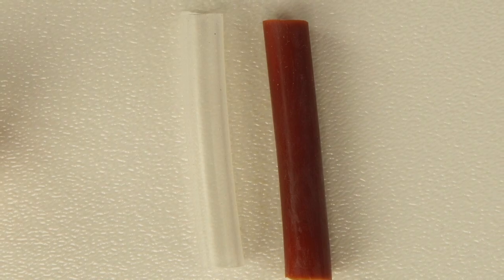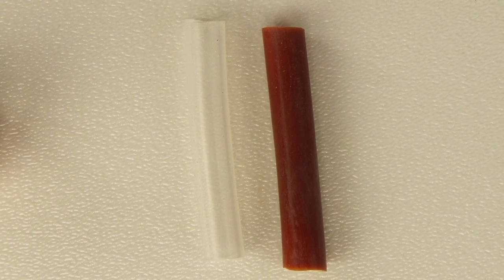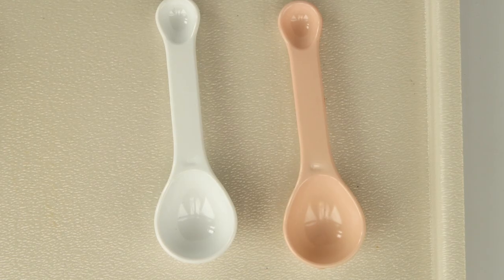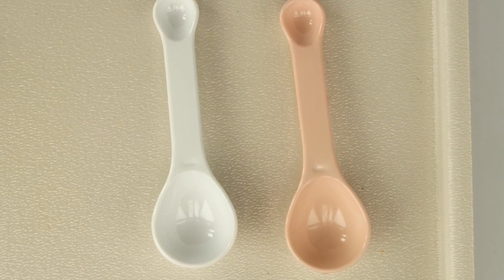Over time, the iodine molecules penetrate deep into the plastic items through a process known as diffusion. Iodine colors different kinds of plastic differently, ranging from brown to pink.